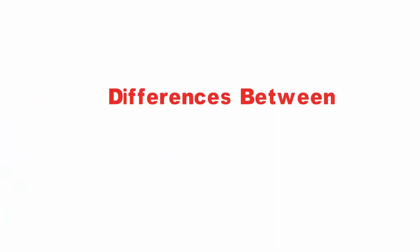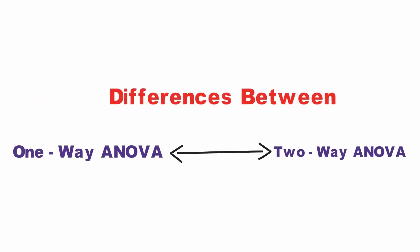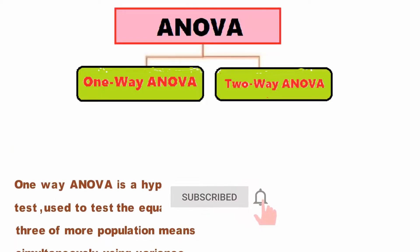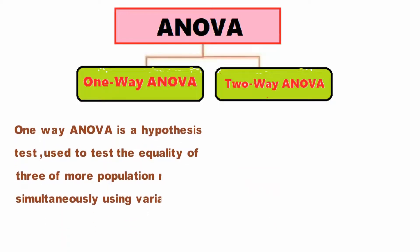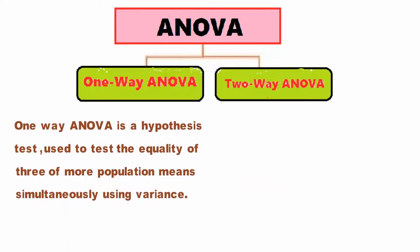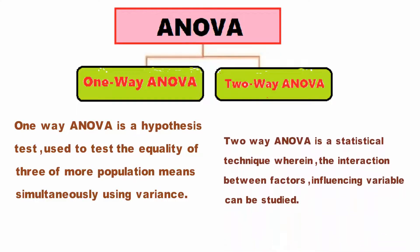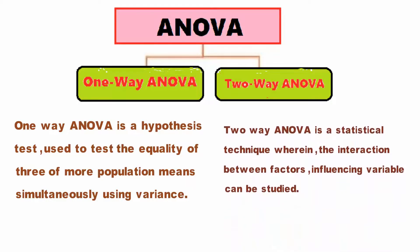The differences between one-way and two-way ANOVA can be drawn clearly on the following grounds. One — Meaning: a hypothesis test that enables us to test the equality of three or more means simultaneously using variance is called one-way ANOVA. A statistical technique in which the interrelationship between factors influencing a variable can be studied for effective decision making is called two-way ANOVA.